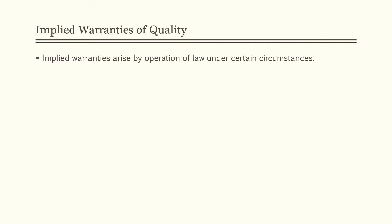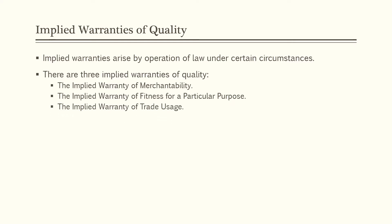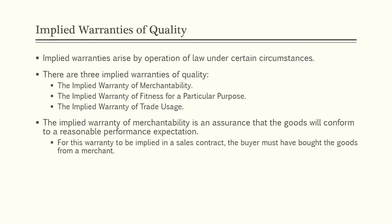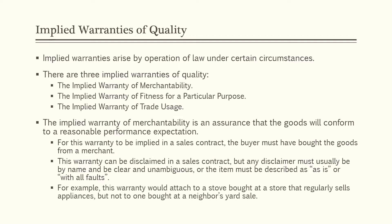Next, we will discuss implied warranties of quality. Implied warranties arise by operation of law under certain circumstances. There are three implied warranties of quality: the implied warranty of merchantability, the implied warranty of fitness for a particular purpose, and the implied warranty of trade usage. The implied warranty of merchantability is an assurance that the goods will conform to a reasonable performance expectation. For this warranty to be implied in a sales contract, the buyer must have bought the goods from a merchant. This warranty can be disclaimed in a sales contract, but any disclaimer must usually be by name and be clear and unambiguous, or the item must clearly be described as as-is or with all faults.